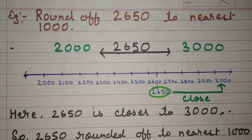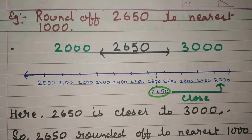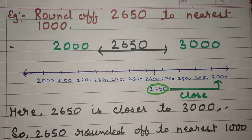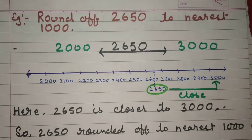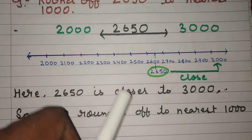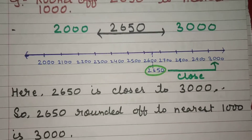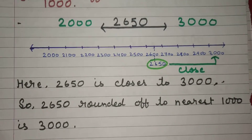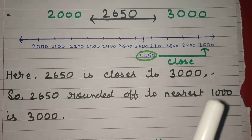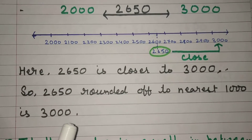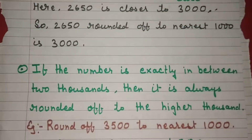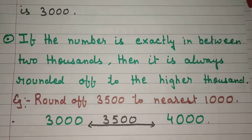Another example: Round off 2650 to the nearest thousand. 2650 lies between two thousand and three thousand. Here, 2650 is closer to three thousand. So 2650 rounded off to the nearest thousand is 3000.